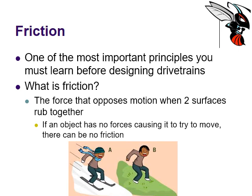They both are experiencing friction. Skier A will be experiencing less friction since he's on skis going down a snowy hill. This guy here is going to be experiencing a lot of friction trying to slide down a grassy hill in shoes or socks or whatever it is. If an object has no forces causing it to try to move, there is no friction. Friction is the force that opposes motion when two surfaces are rubbing together.